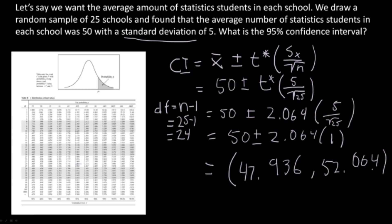So this interval essentially means that there's a 95% chance that the average amount of statistics students in each school in the country exists between 47.936 and 52.064.